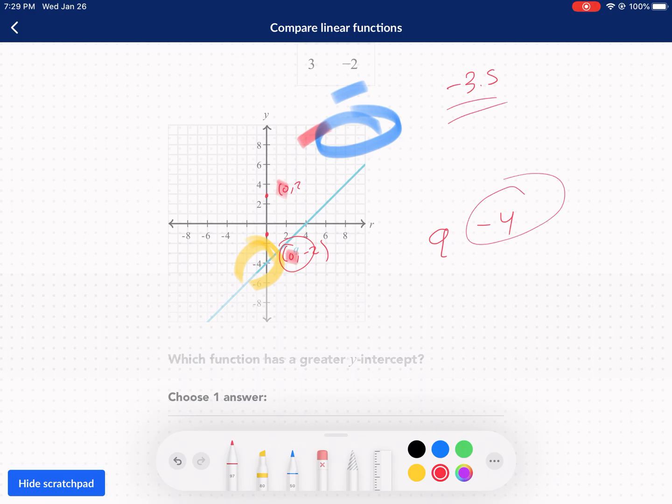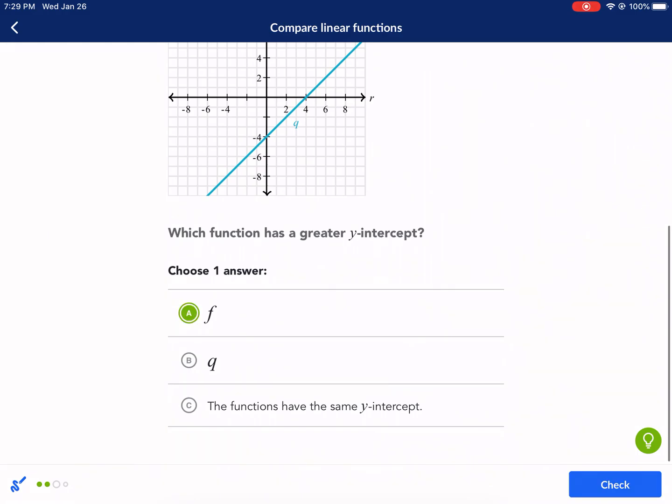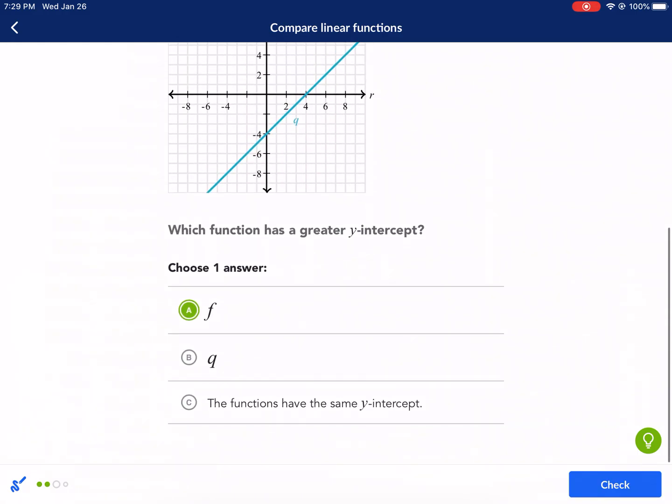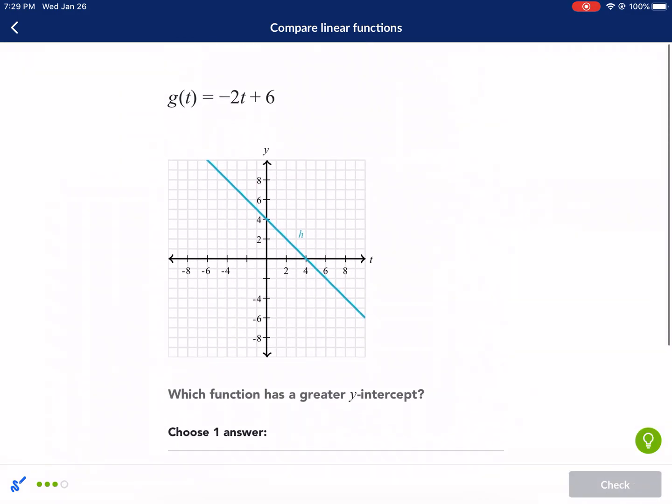This one is Q. Q has a Y-intercept negative 4, and it wants a greater Y-intercept. Don't be fooled, this is more negative. So this guy, negative 3.5, less negative means he's greater. So that's F, I think, yep, F of R. He is greater. Next question.